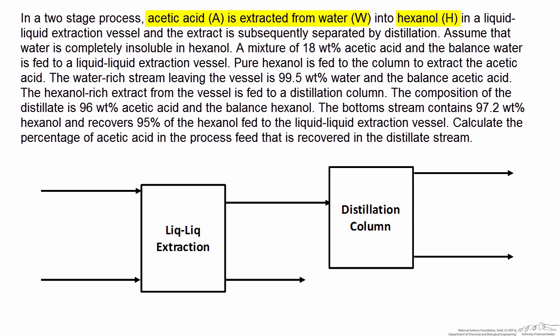After reading the problem statement it's clear that we don't have any flow rates given. It's important that the total flow rate of every stream is either known or labeled with an unknown variable, so I'm going to label each of the six streams. All the compositions given are in weight percent, so I've assigned variables m1 through m6 to represent the mass flow rate of the six streams. The easiest way to fully label the diagram is to go line by line through the problem statement and apply the information to the appropriate stream.